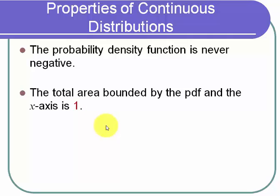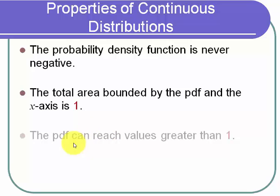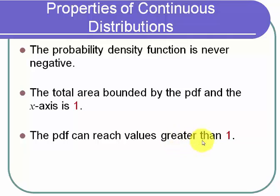One thing that may feel wrong but is actually true: the probability density function can reach values greater than one. That feels wrong because for discrete probabilities you can never have values greater than one. But for continuous distributions you can, because we're talking about area under a curve. For example, if we're only between zero and a half, the height has to be greater than one so that the area equals one. Don't be surprised if probability density functions get higher than one.